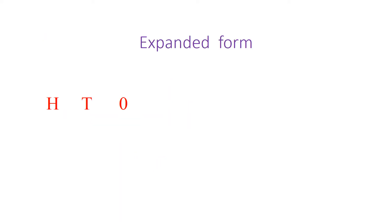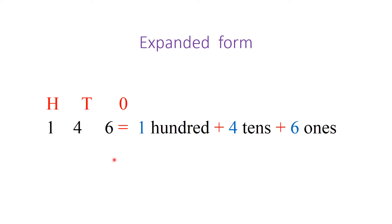First, we are going to see how to expand a given number — that is, expanded form. The word itself says 'expand.' For example, the given number is 146. We all know that 6 is in the 1's place, 4 is in the 10's place, and 1 is in the 100's place. We should expand this number in the form of 1's, 10's, and 100's. Since 1 is in the 100's place, we write it as 100.